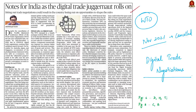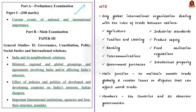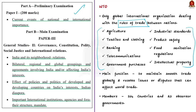We will discuss the JSI on e-commerce, India's stance, and issues in digital trade. The WTO is the only global international organization dealing with rules of trade between nations, covering sectors like agriculture, textiles, banking, telecommunications, government purchases, intellectual property, and more. It currently has 164 members and 23 observer governments. Despite this, WTO could not conclude any major negotiations in the past two decades on e-commerce and digital trade.